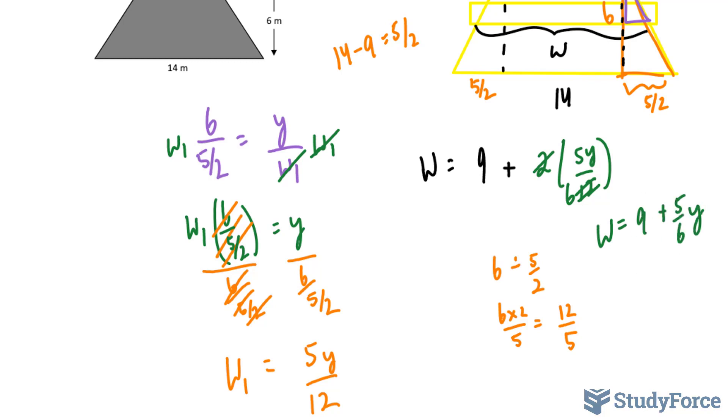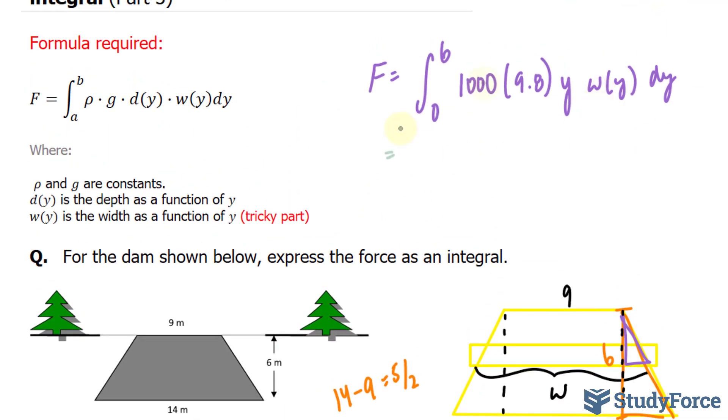I'm going to take this equation now and substitute it into here. I'll multiply this at the same time, it's 9,800, the integral between 0 and 6, y, and we had 9 plus 5y over 6 with respect to y, so we have dy.